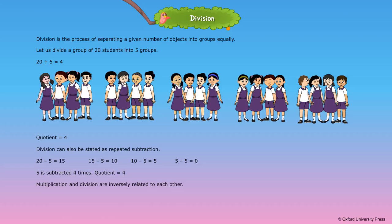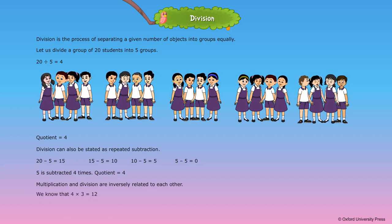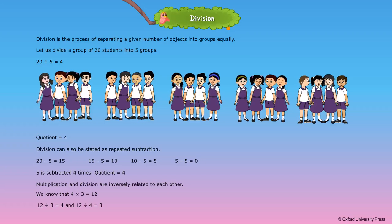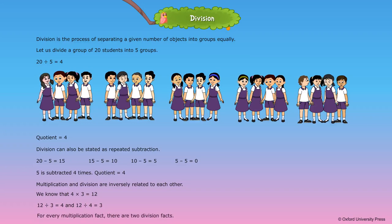Multiplication and division are inversely related to each other. We know that 4 into 3 is equal to 12. So 12 divided by 3 is equal to 4, and 12 divided by 4 is equal to 3. For every multiplication fact, there are two division facts.